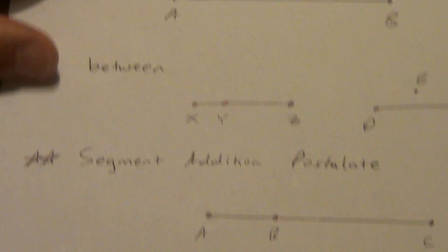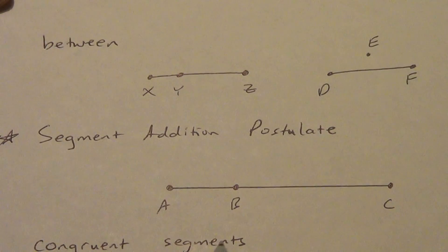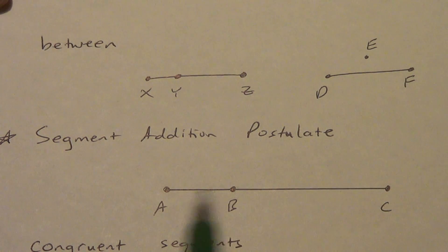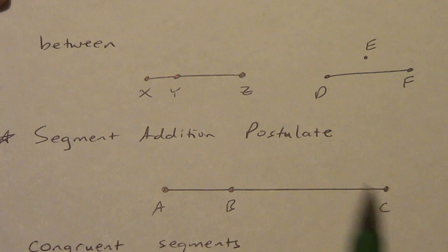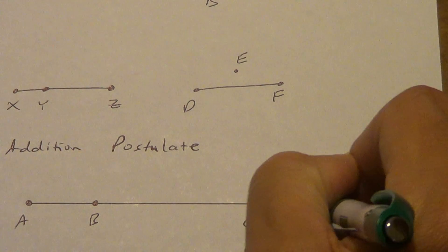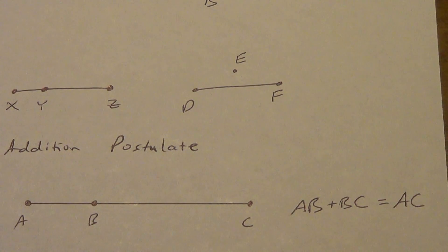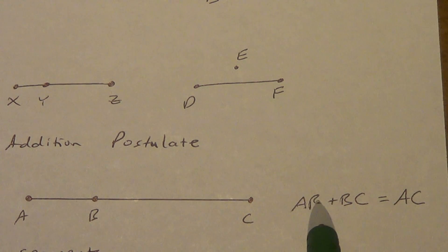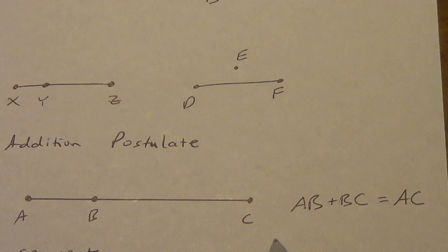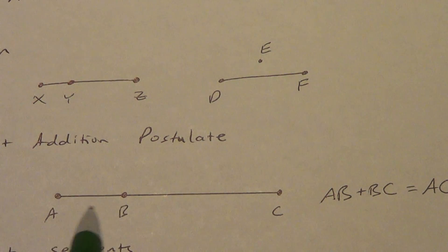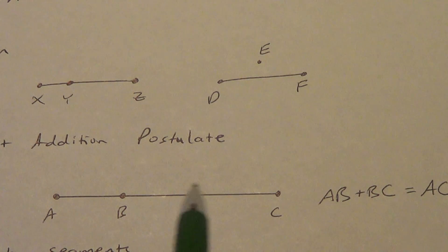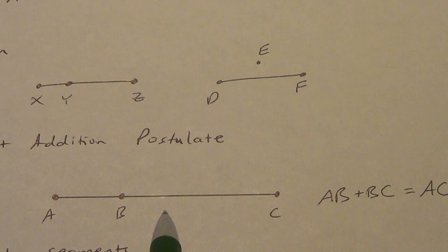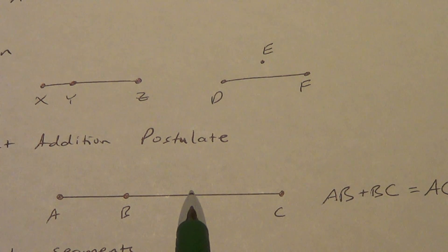The Segment Addition Postulate says: if B is between A and C — and remember, between tells us they have to be on the same line — then AB plus BC equals AC. Without any symbol over the top, those letters mean the length of the segment. So the length of AB plus the length of BC equals the whole length AC. It's pretty simple — it makes sense, and postulates definitely make sense.